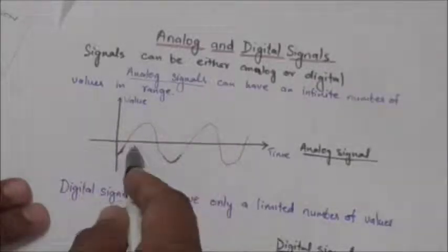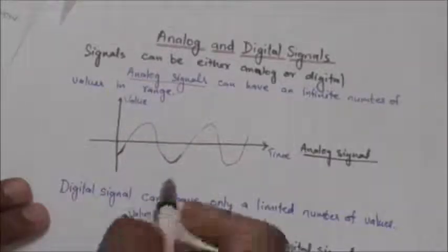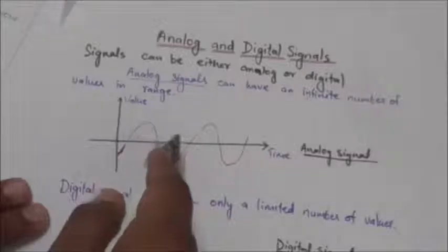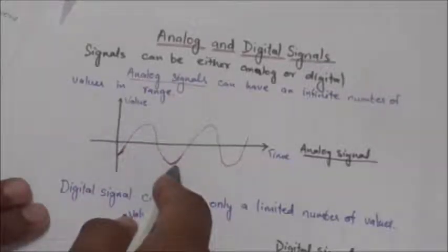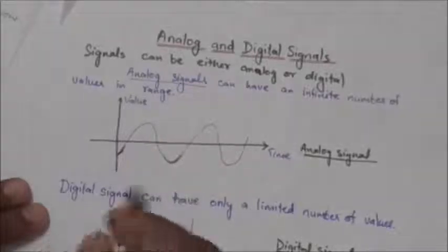You can see that as the wave moves from one value to another, it passes through and includes an infinite number of values along its path. The curve representing the analog signal passes through an infinite number of points.